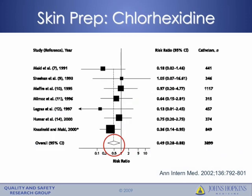Another critical approach to preventing CLABSIs is using appropriate skin prep and making sure it is applied correctly. Several studies have been done comparing chlorhexidine with povidone iodine. Although many of these studies were small and did not individually show a difference, when combined in a meta-analysis there was a significant benefit seen with chlorhexidine. The summary data showed a risk ratio of 0.49 associated with use of chlorhexidine rather than povidone iodine, leading to a recommendation that chlorhexidine be considered the skin antisepsis of choice for placement and maintenance of central lines.